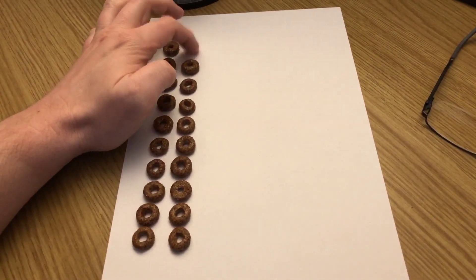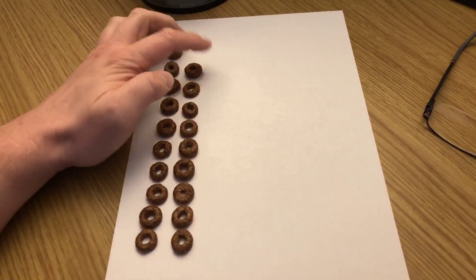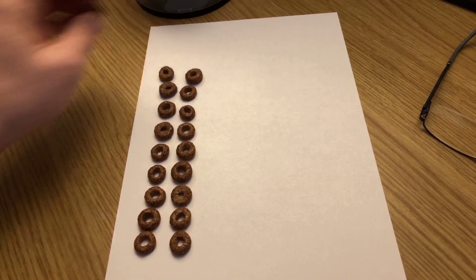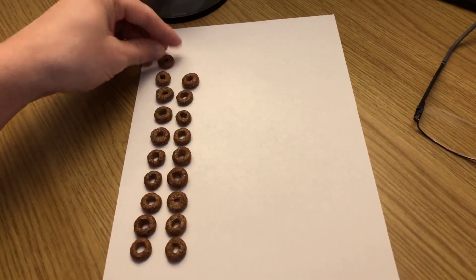Is it odd or even? Have a look. It's odd, isn't it? Because look, we haven't got the same both sides. We've got 10 that side and 9 that side. We would need one more to make it even or take one off, wouldn't we? So 19, look, is one less than 20. If we had one more, we would have 20.